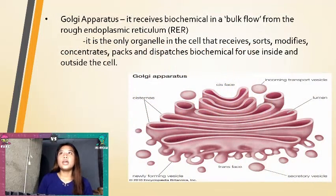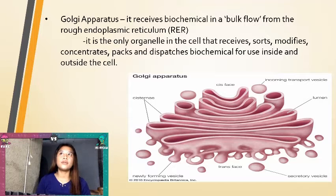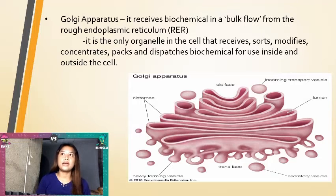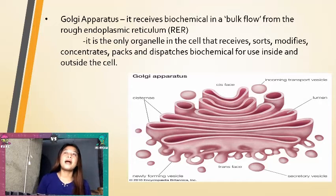Golgi apparatus. It receives biochemicals in bulk flow from the rough endoplasmic reticulum. It is the only organelle in the cell that receives, sorts, modifies, concentrates, packs, and dispatches biochemicals for use inside and outside the cell.